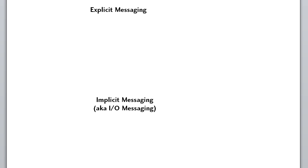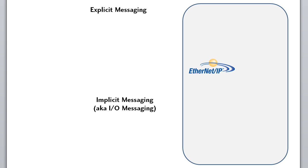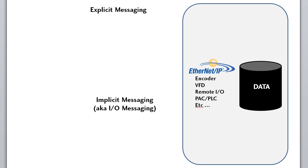The idea is simple. You have an EtherNet/IP enabled device like an encoder, a VFD, remote I/O, even another PAC or PLC, and it has data that you need to access so you can configure and monitor the device. EtherNet/IP in the Productivity Series of controllers does this via explicit and/or implicit messaging of the EtherNet/IP standard.